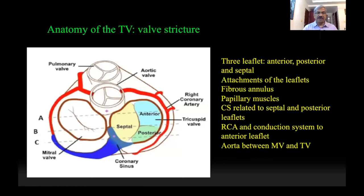The anatomy of the tricuspid valve consists of three leaflets of unequal sizes. The septal leaflet is usually the smallest. There is an annular attachment of each leaflet. Each leaflet also receives papillary muscles, which vary in number from 2 to 9, but the most consistent is the anteropapillary muscle, which arises from the moderator band. Each papillary muscle gives chordae to adjacent leaflets. The commissure between the septal and posterior leaflet is related to the entry of the coronary sinus into the right atrium, and the anterior leaflet is related to the right coronary artery as well as the conduction system.